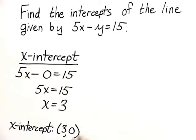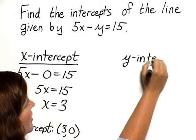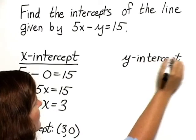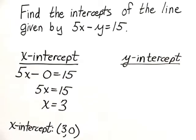Now let's find the y-intercept. For the y-intercept, we do almost exactly the same thing, only when the line crosses the y-axis, the x-coordinate will be 0.